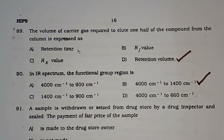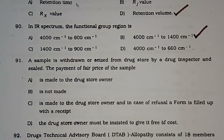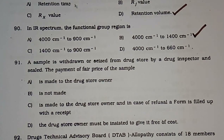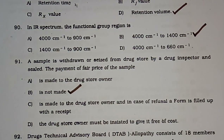Question number 91: A sample withdrawn or seized from a drugstore by a drug inspector and sealed — the payment of fair price to the drugstore owner is made, is not made, is made with a receipt form in case of refusal, or the owner must give it free of cost. The correct answer is — it is not made.